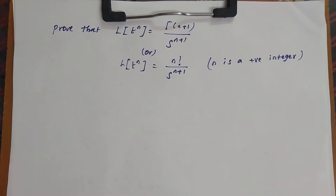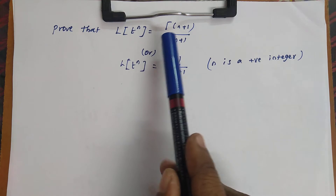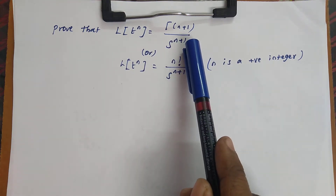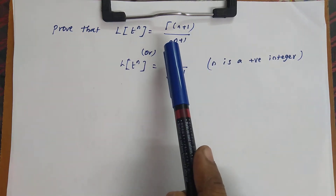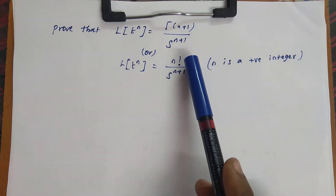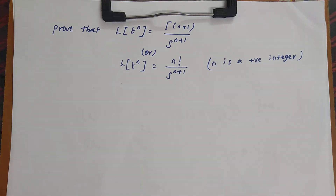Welcome to the lecture series on Laplace transforms. Today we are going to see an important result. Look at the question: prove that L of t power n is equal to gamma of n plus 1 by s power n plus 1. The same question can be asked as: L of t power n equals n factorial by s power n plus 1, where n is a positive integer.